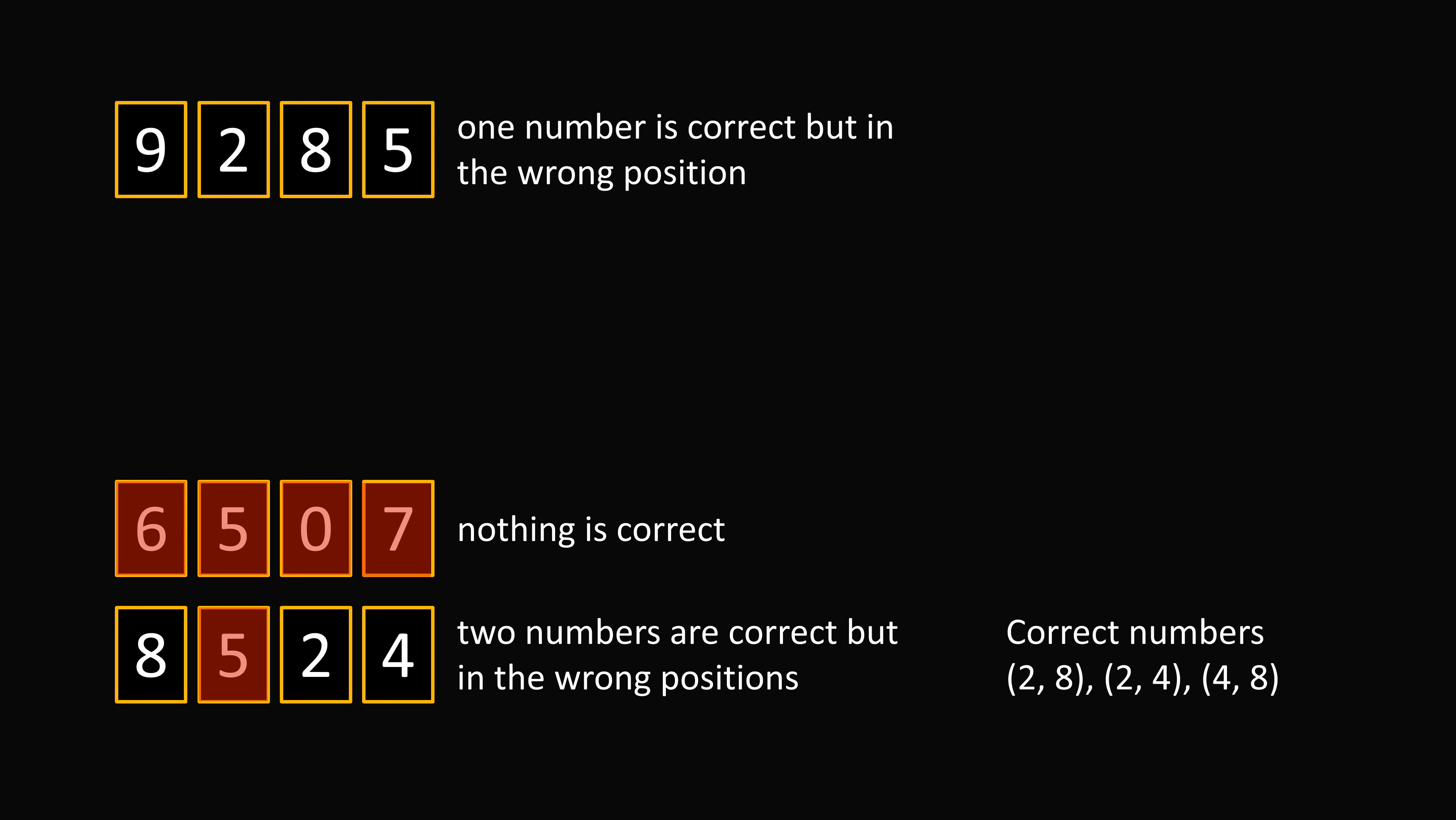Now let's look at the first clue, 9285. One number is correct, but in the wrong position. Now we know 5 is wrong. Of 2 and 8, we know that exactly one of them must be correct. Because the possibilities are 2 and 8, 2 and 4, and 4 and 8. Furthermore, the clue says one number is correct. So we can't have both 2 and 8 being correct. So we can eliminate 2 and 8 being correct. But if one of these is correct, that means 9 has to be wrong. Because otherwise, we would have 2 correct numbers. So we figured out a lot from this clue.